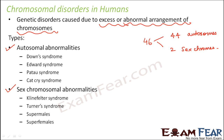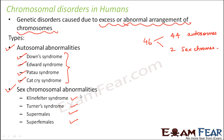Some examples of autosomal disorders are Down syndrome, Edwards syndrome, Patau syndrome, and Cat cry syndrome. In all of these syndromes, there is some abnormal arrangement of chromosomes on the autosomes and the sex chromosomes do not play any role. Whereas when you talk about Klinefelter syndrome, Turner syndrome, super males, or super females, in all of these there is some kind of abnormality in the sex chromosomes.